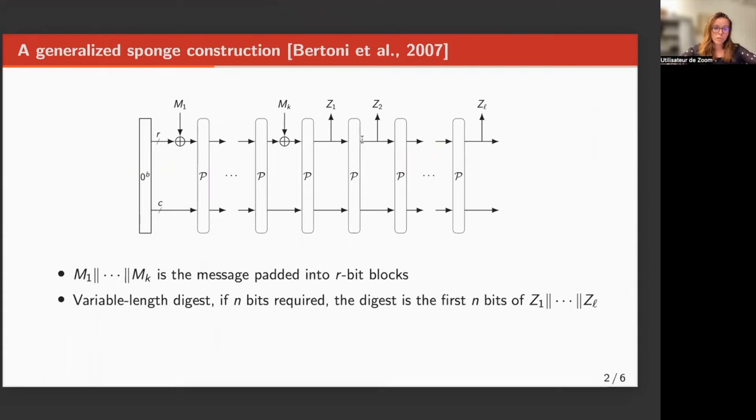The sponge operates on a state of size b-bits, and it is split into two parts. The first one is called the outer part. It comprises r-bits and determines the rate at which message blocks are absorbed and the digest is extracted.